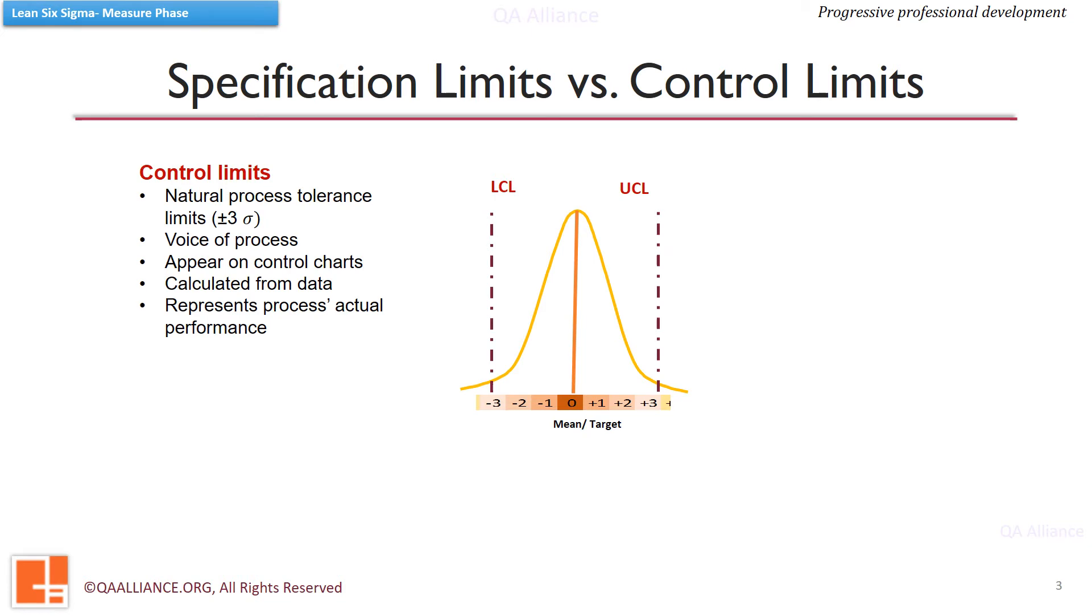There are another type of limits, called the specification limits. These limits are not calculated from the process data, rather they are given by the customer or are agreed upon with the customer. That is why specification limits are known as voice of the customer and they represent the desired performance of the process.